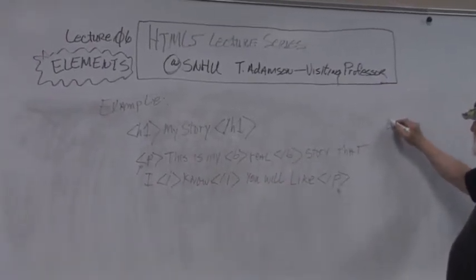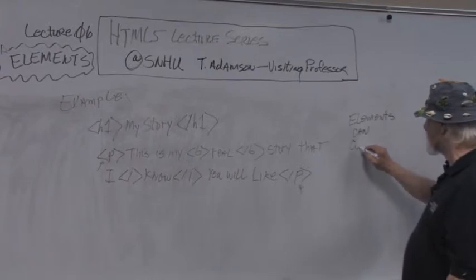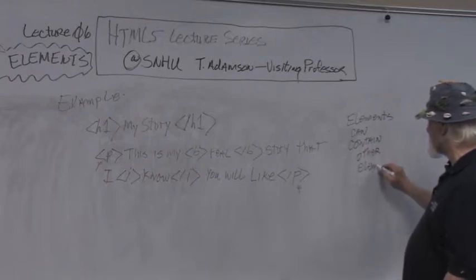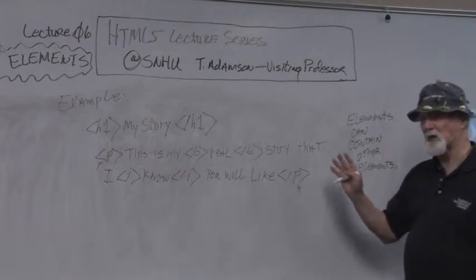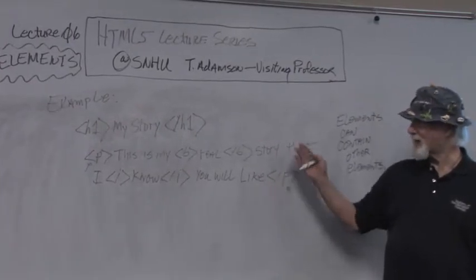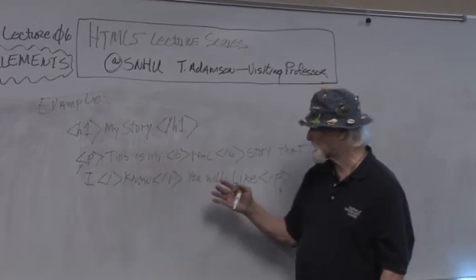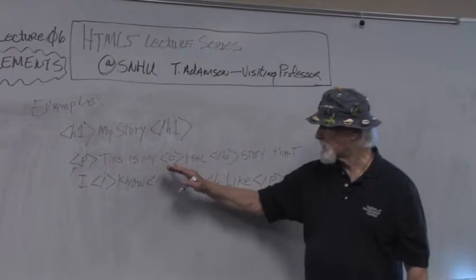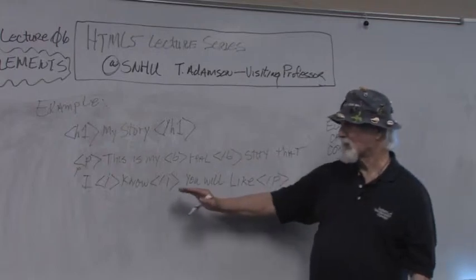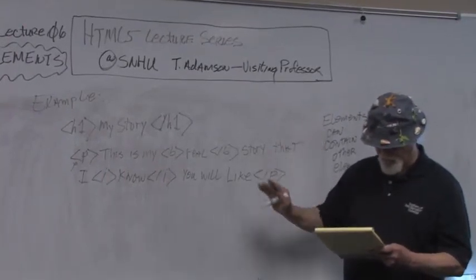Elements can contain other elements. When we treat this as an object, I can treat the whole paragraph as an object with properties and methods, and within that object I can treat the bold and italic as separate objects — because they're separate elements contained within it. This gives tremendous power over what you can do with a website, and you're beginning to see the secrets of HTML5.